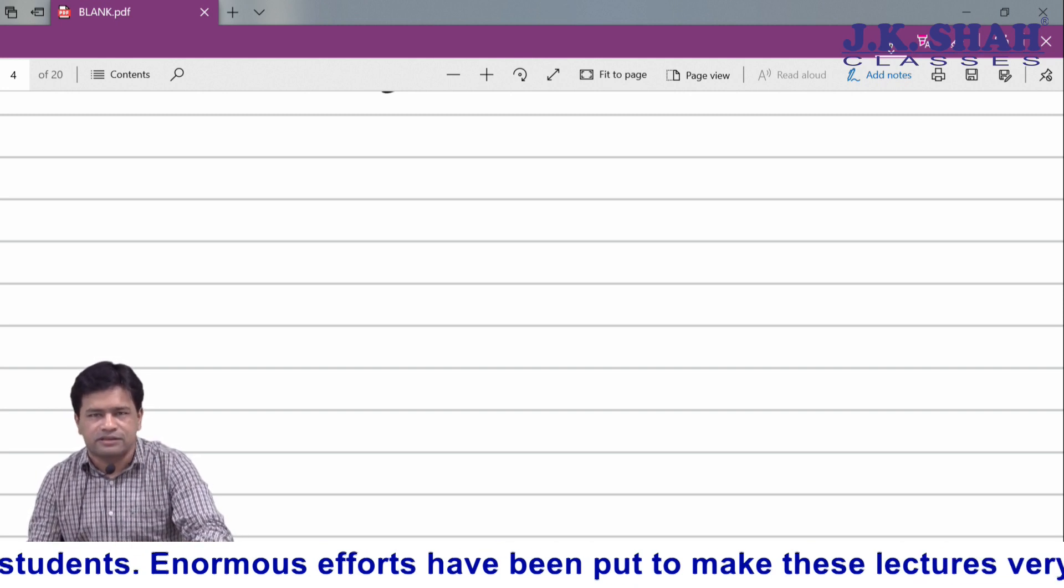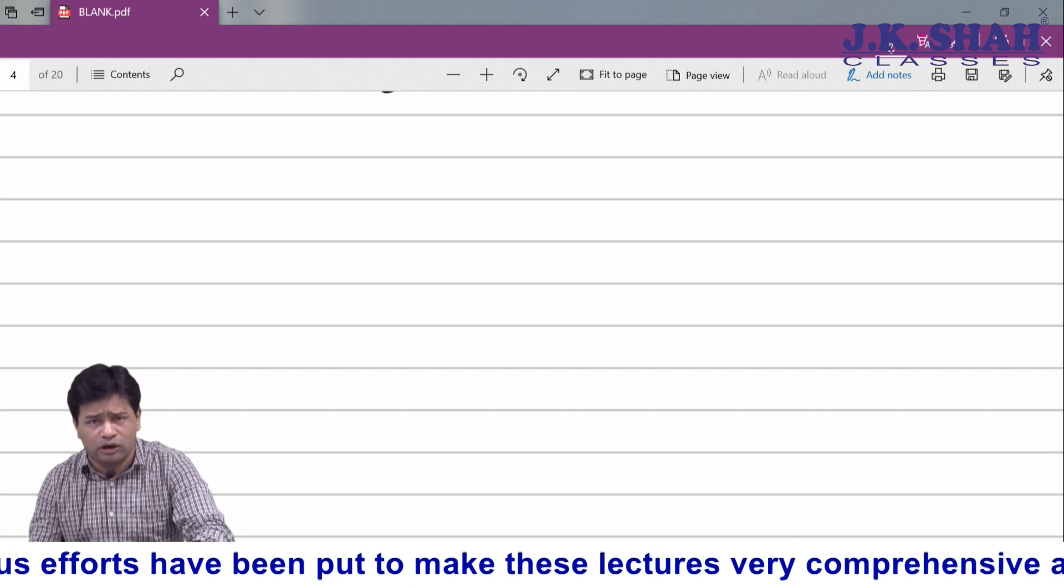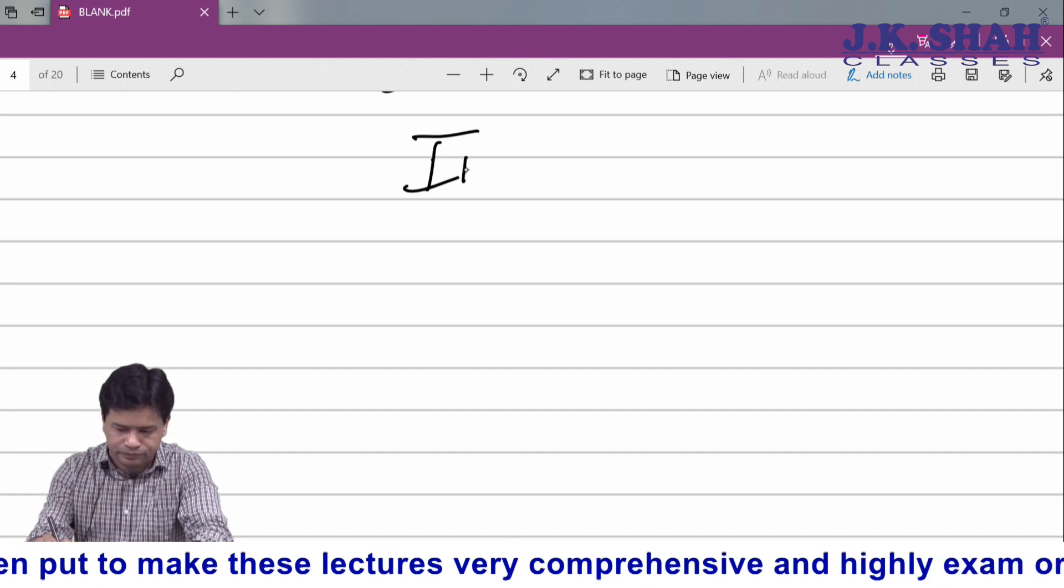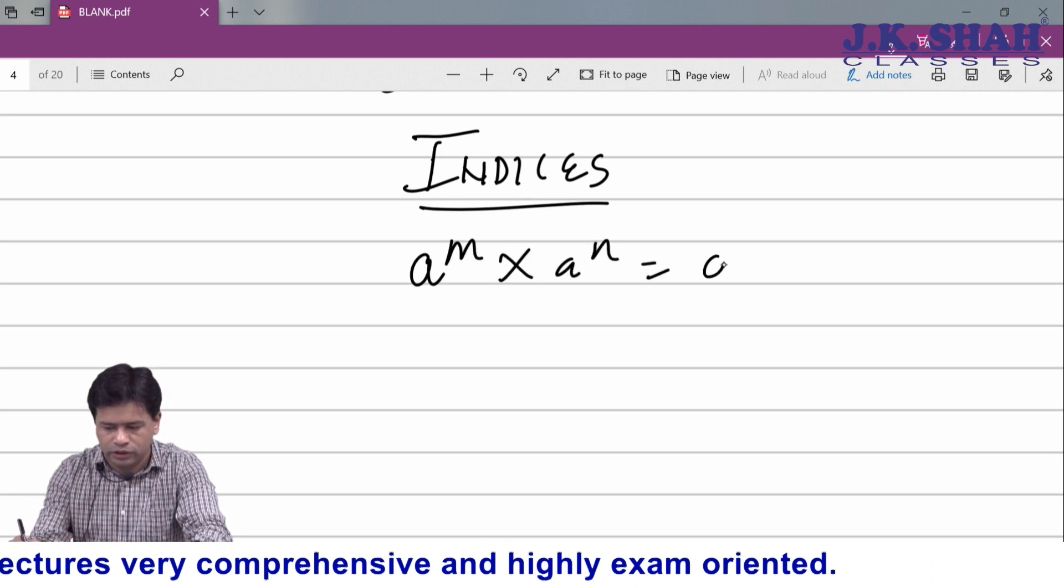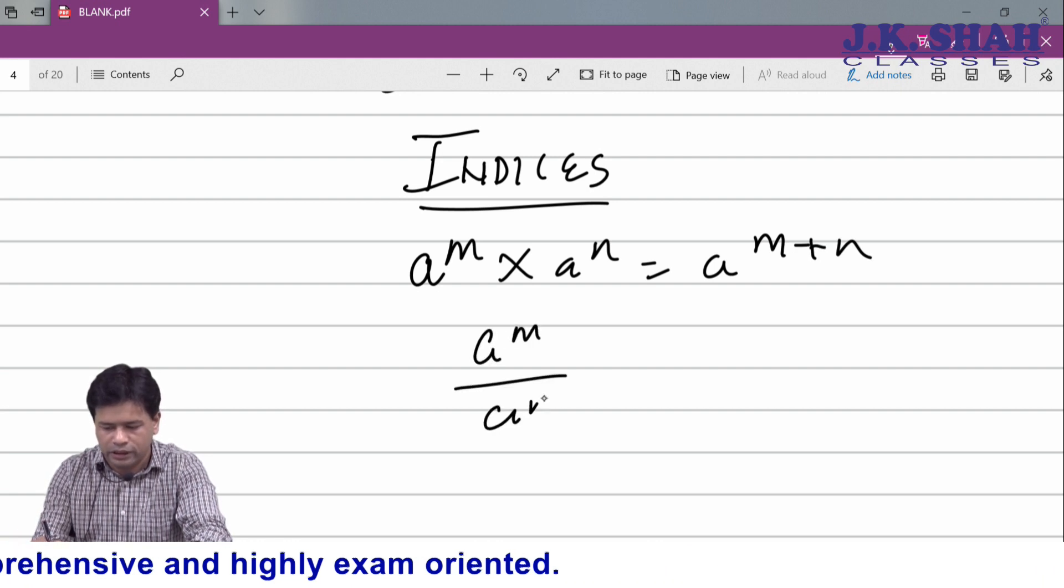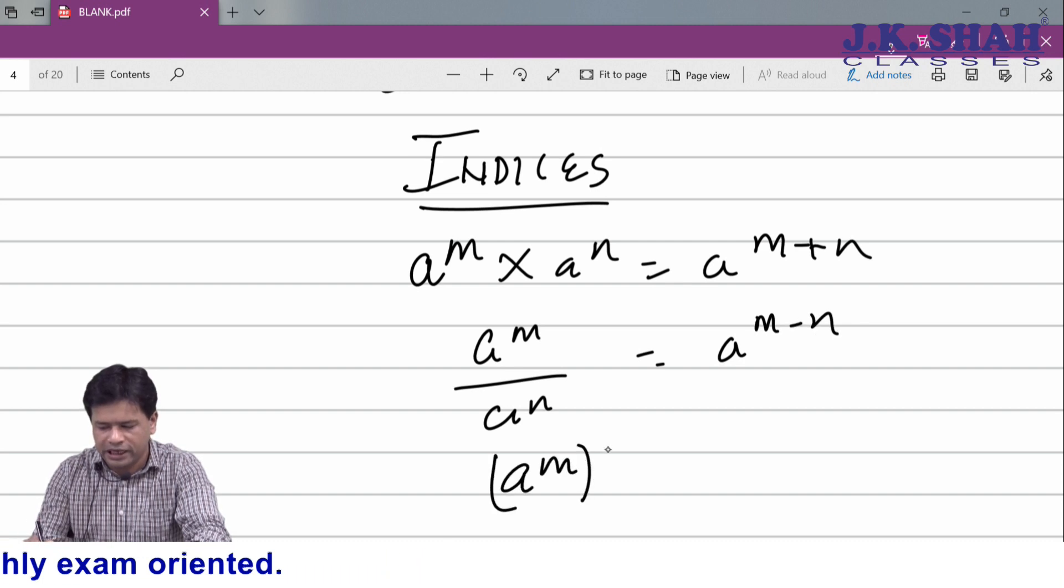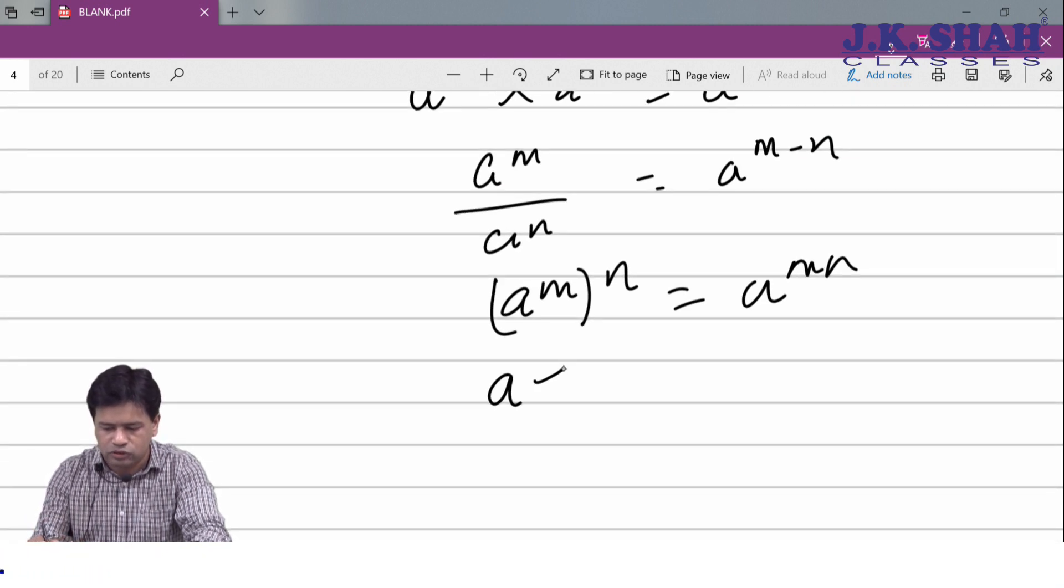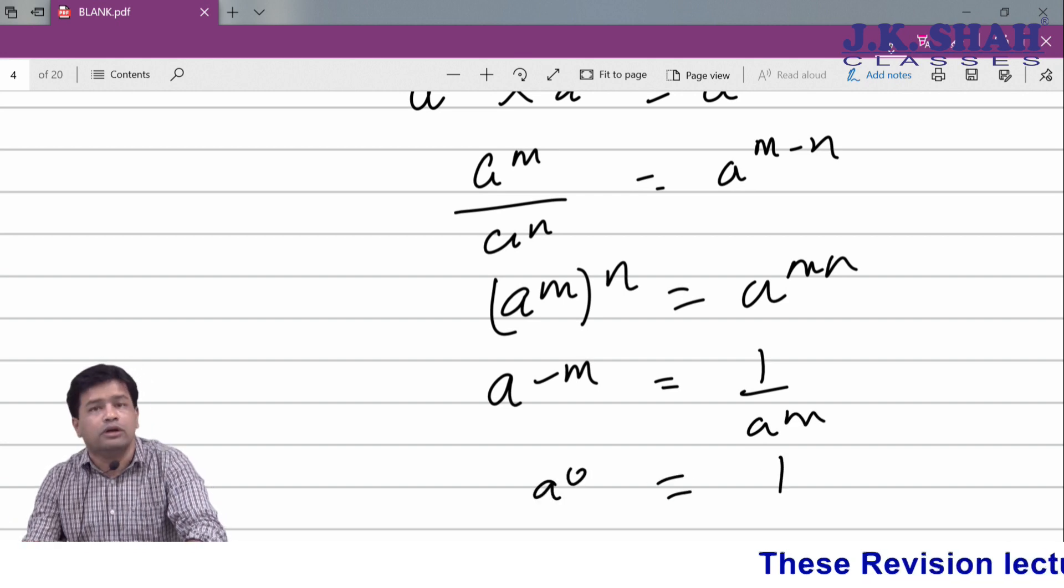Now we will go ahead with indices. In indices, there is nothing new as such - basic rules of indices we have to keep in mind. a raised to m upon a raised to n equals a raised to m minus n. a raised to m the whole raised to n equals a raised to mn. a raised to minus m equals 1 upon a raised to m. Any finite number raised to 0 equals 1.